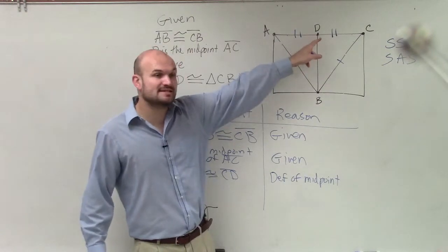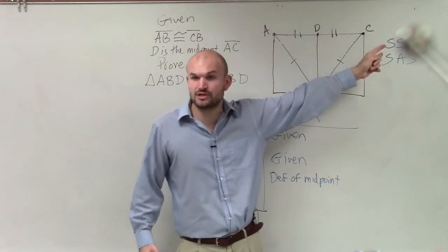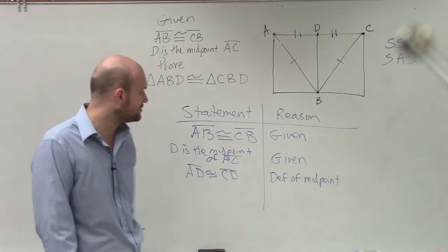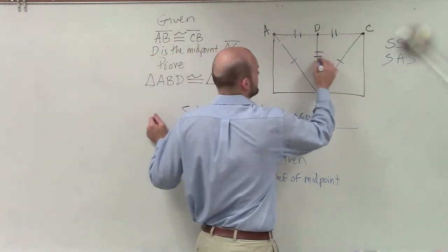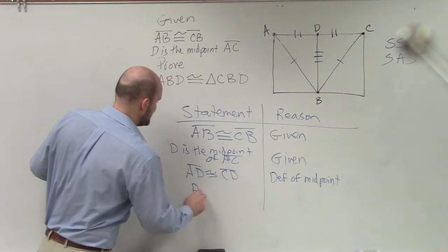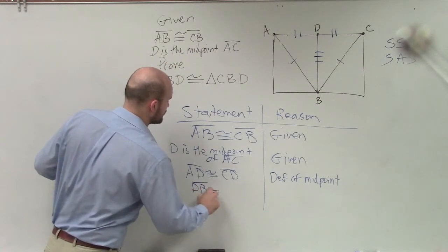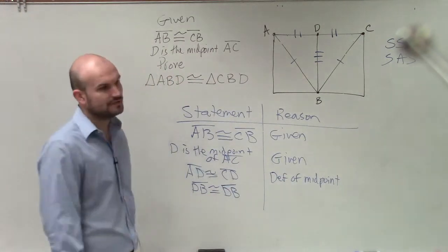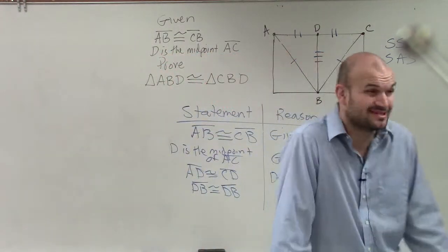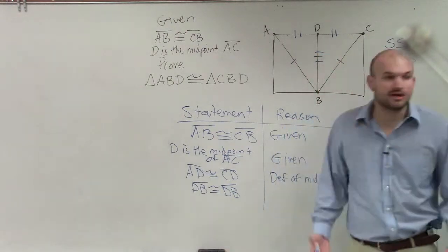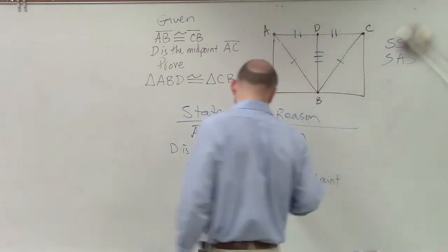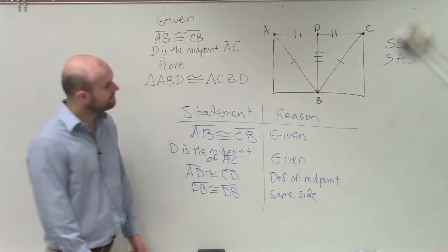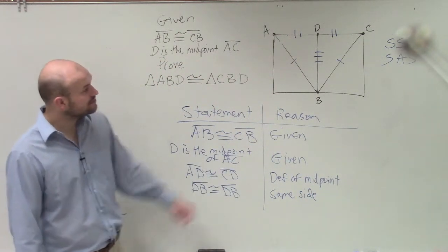So now, just because we know that's a midpoint, we know that these two are equal to each other, because that's what a midpoint tells us. If it's a midpoint, it's halfway in between the two lines. Then we can say that DB is congruent to DB. And you can either just say, if you want to non-formally say it's because of the exact same side, or you could also say it's the reflexive property.